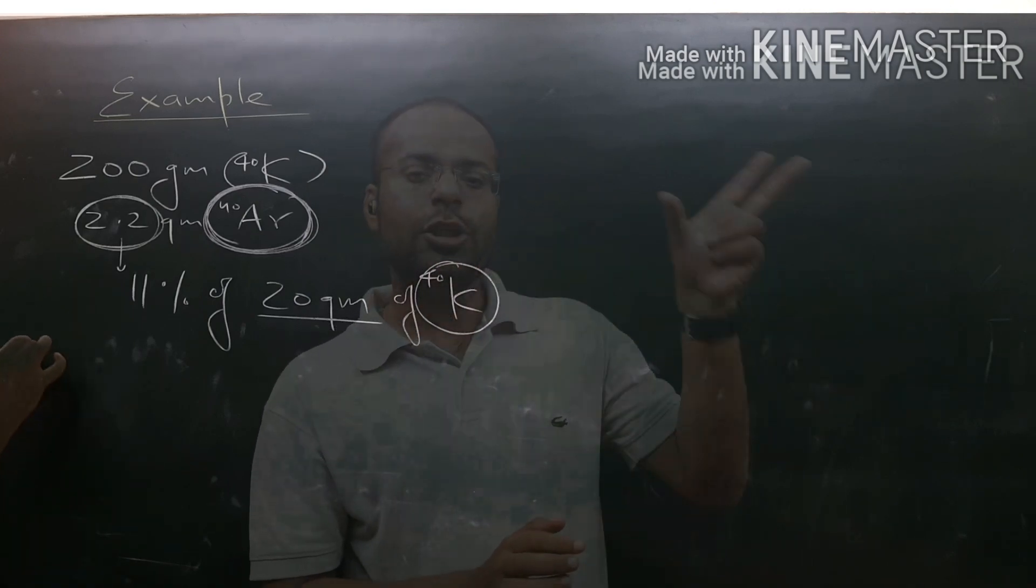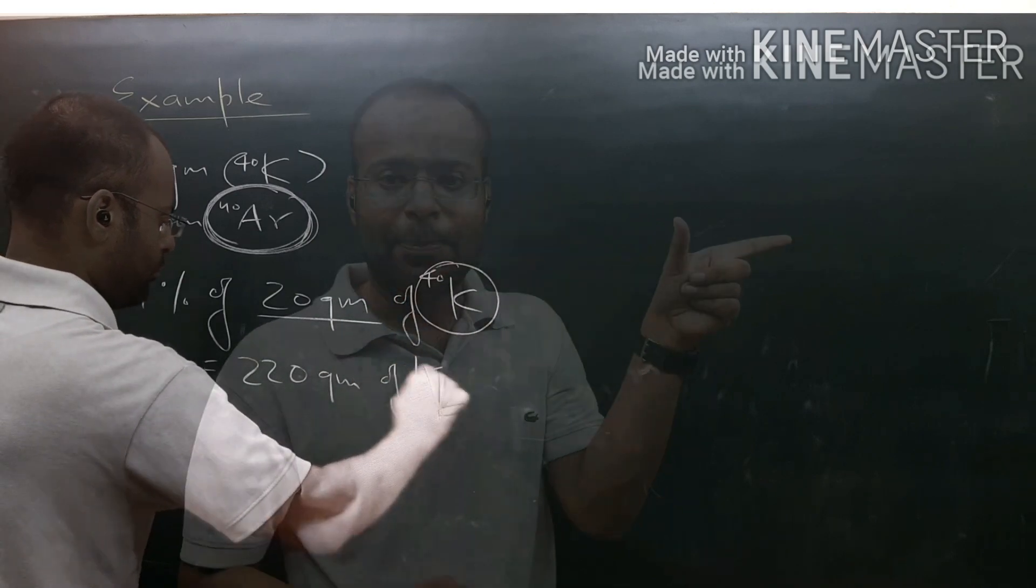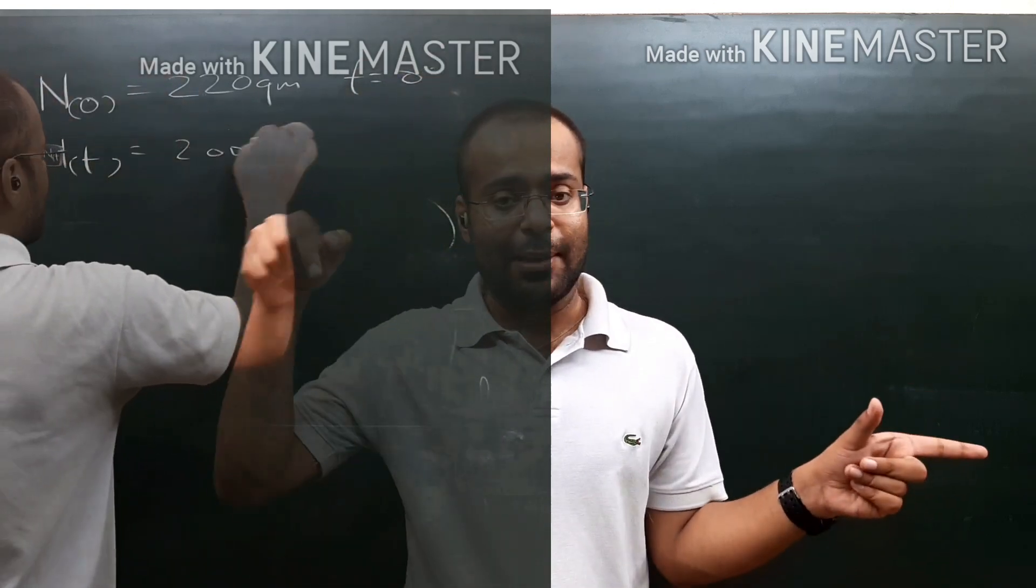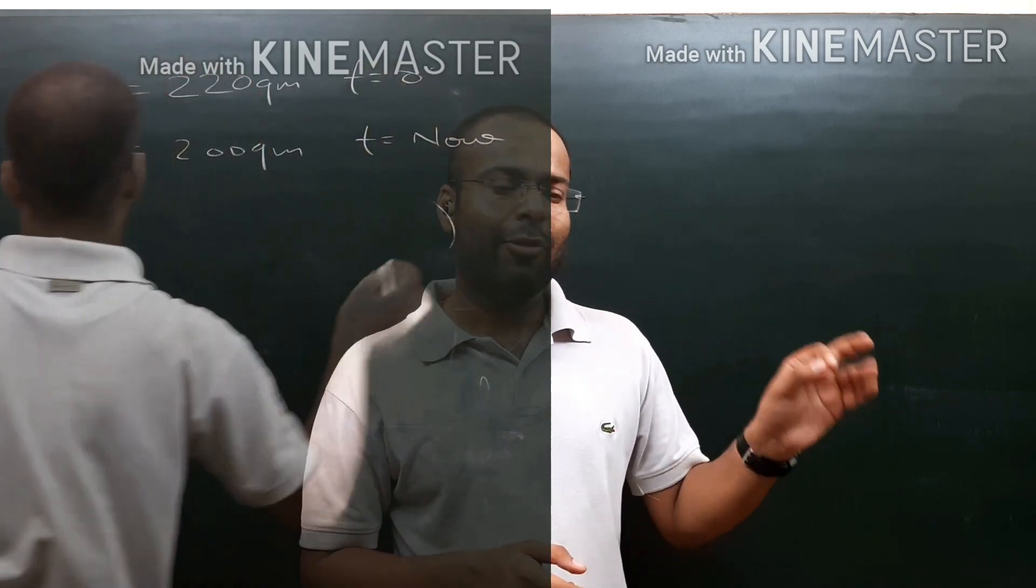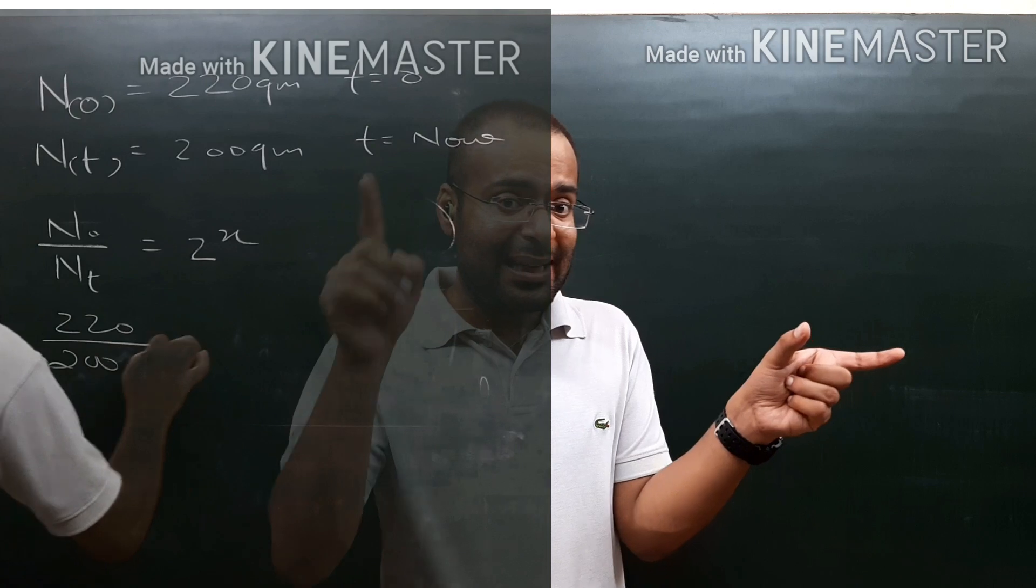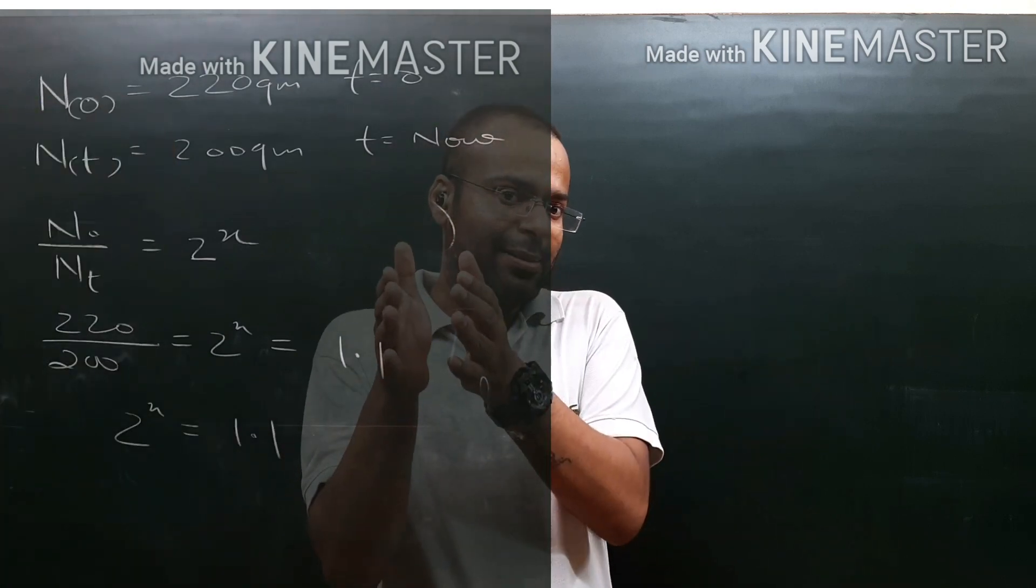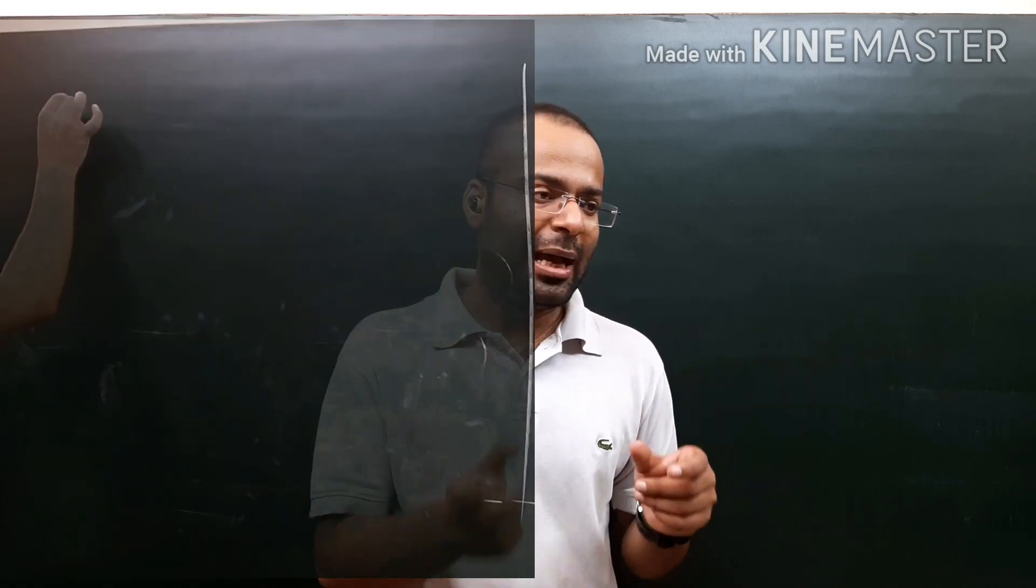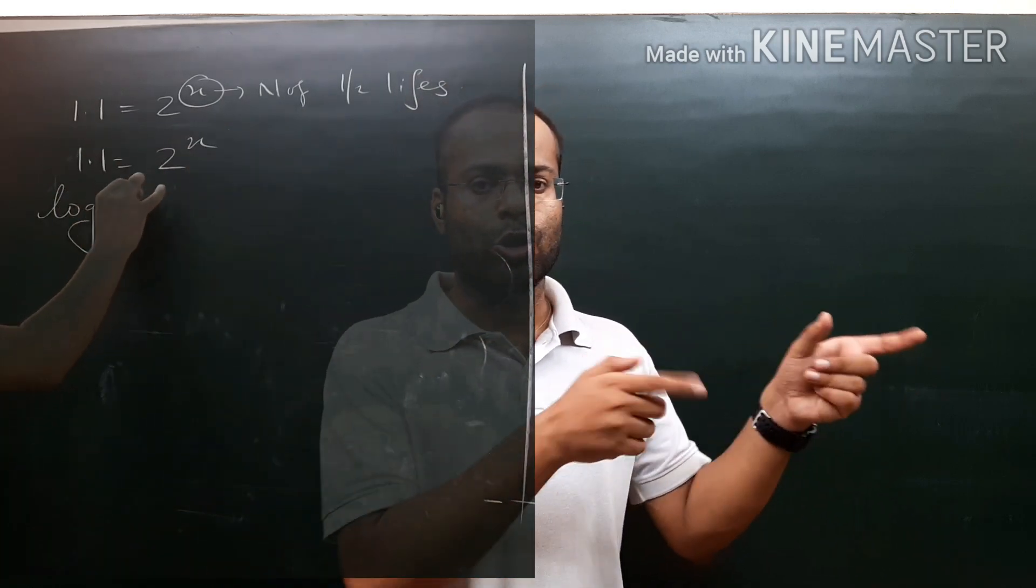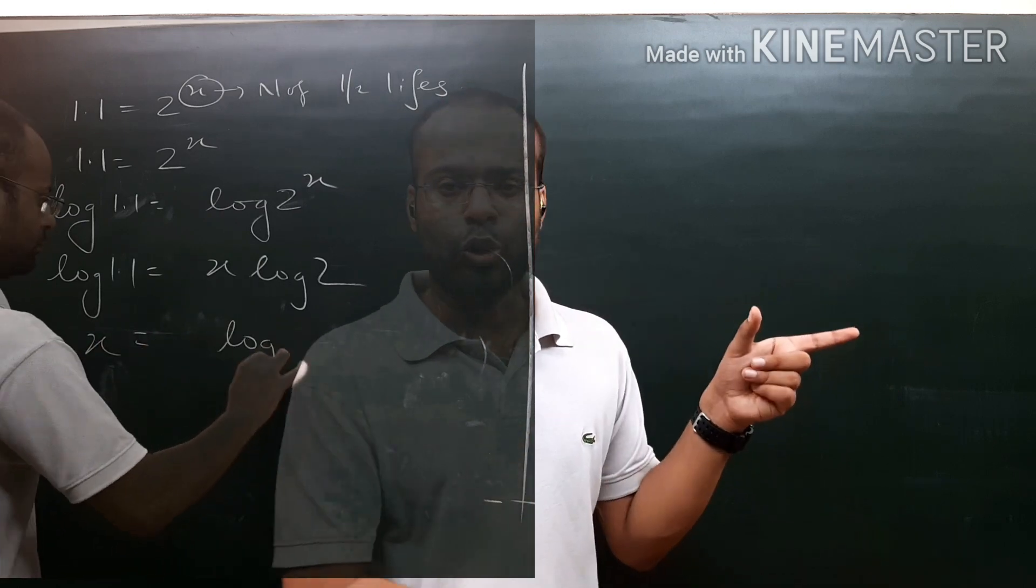The calculations are easy. There was 220 grams of potassium-40, that becomes our N₀ (amount at time zero). Today we have 200 grams, that's Nₜ. We divide 220 by 200, we get 1.1, which equals 2^x where x is the number of half-lives passed. We take logarithms: log(1.1) / log(2) = x, and by calculating we get x = 0.1375.